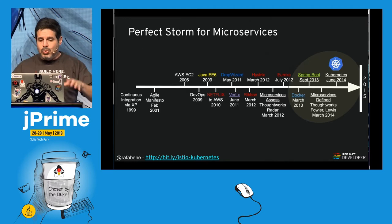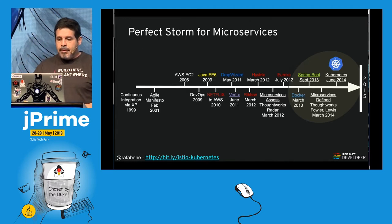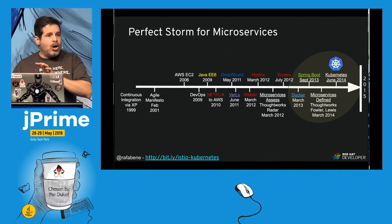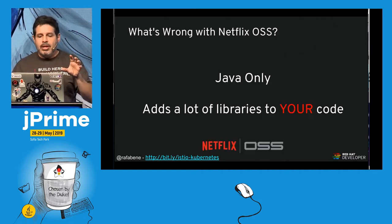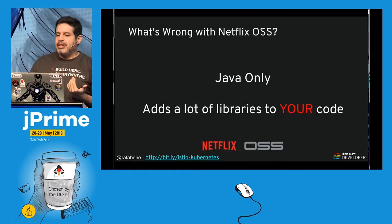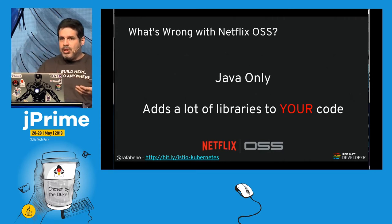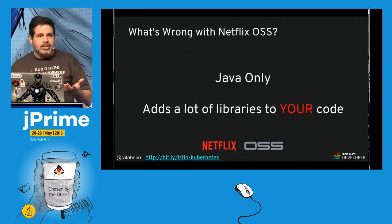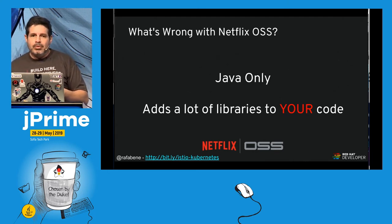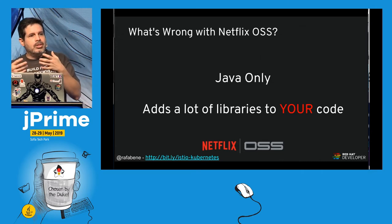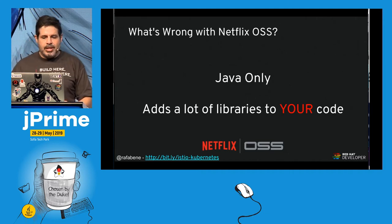Everything started with Netflix — but what's wrong with Netflix OSS? Netflix is Java only, and it adds a lot of libraries to your code. If you're not a Java developer, you'd need to find equivalent libraries that do the same as Netflix OSS.